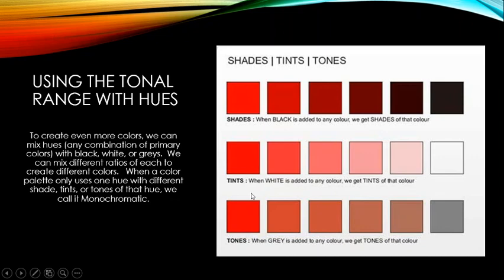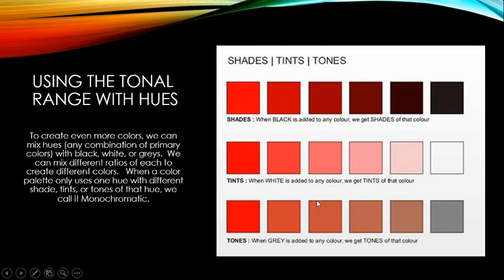Tones are created by adding gray to a pure hue. You can use different types of gray — lighter or darker — to get different effects. We have a large variety of tones we can create with any one hue just by adjusting the ratio of hue to gray and the type of gray used.